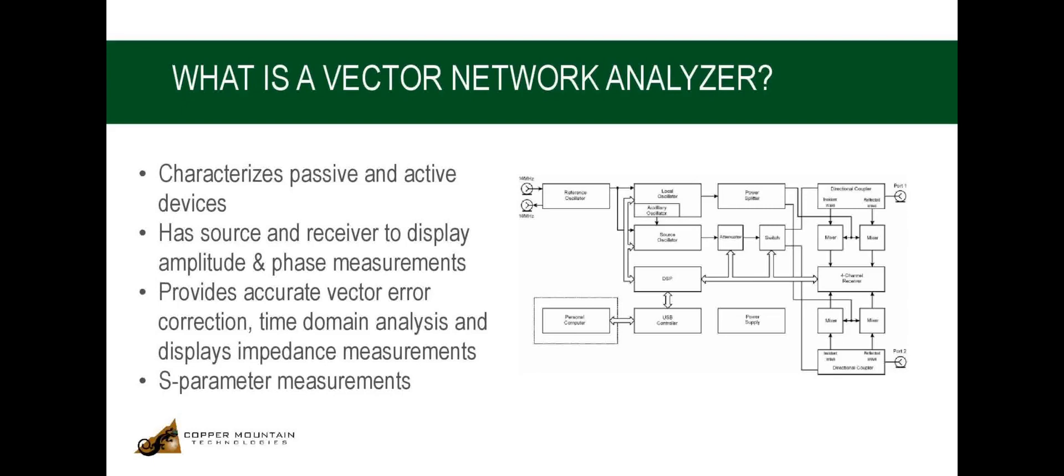The incident and the reflected waves in the directional couplers are passed into the mixers where they are converted to first IF and then passed to the four-channel receiver for further analysis. The four-channel receiver, after filtering, digitally encodes the signal and then supplies it to the signal processor.